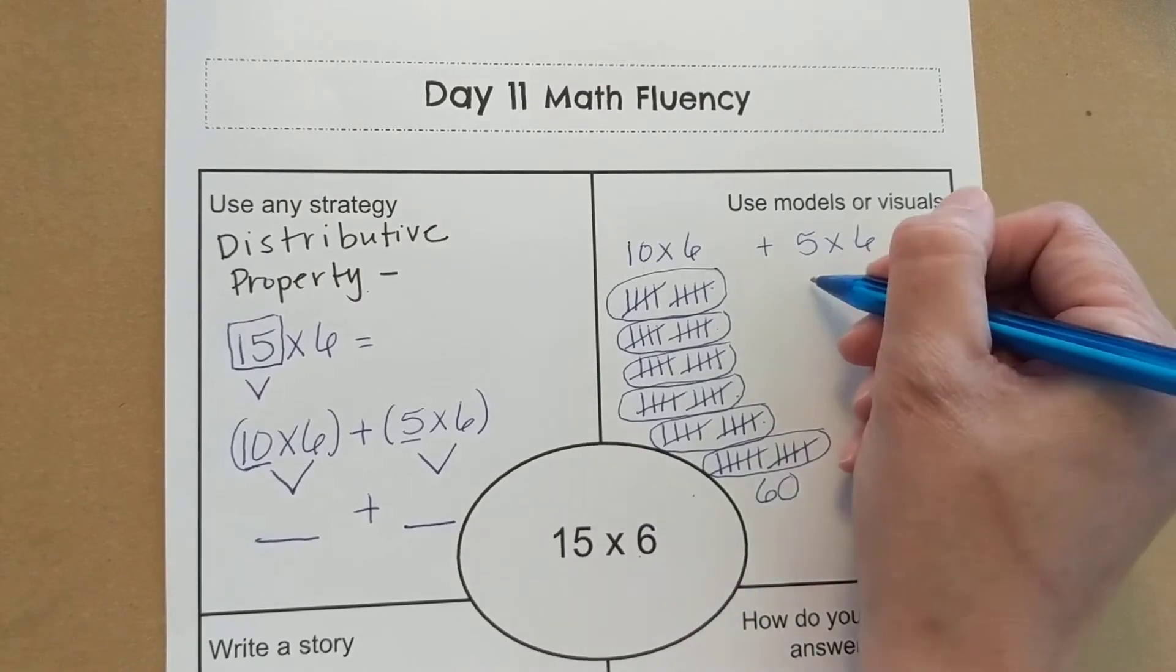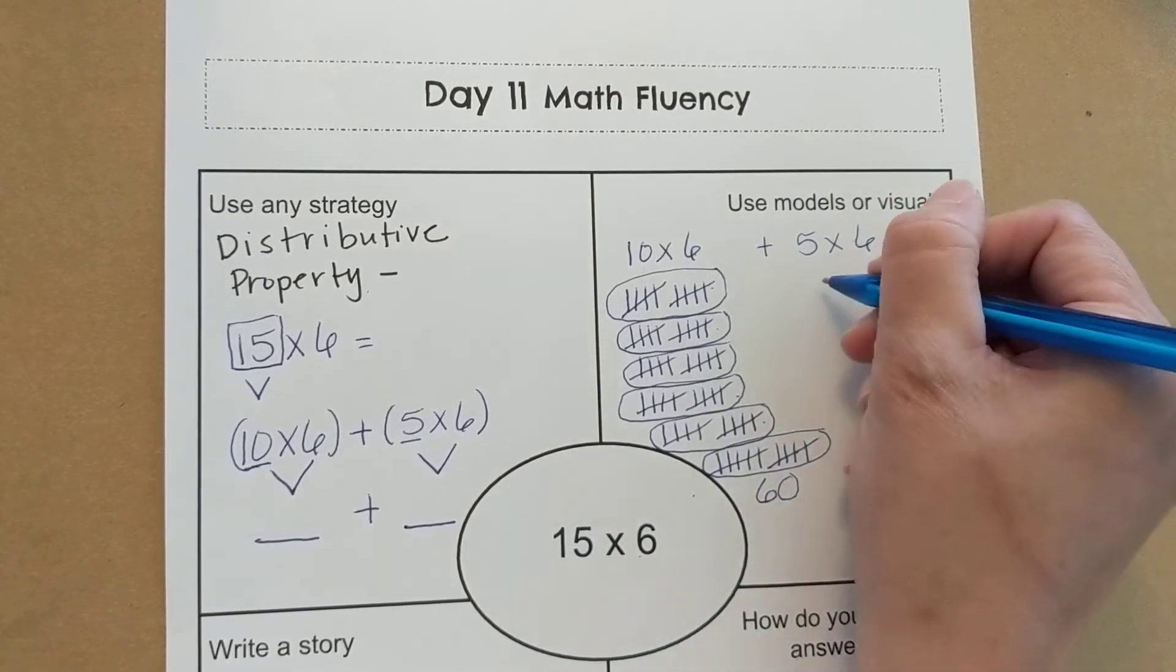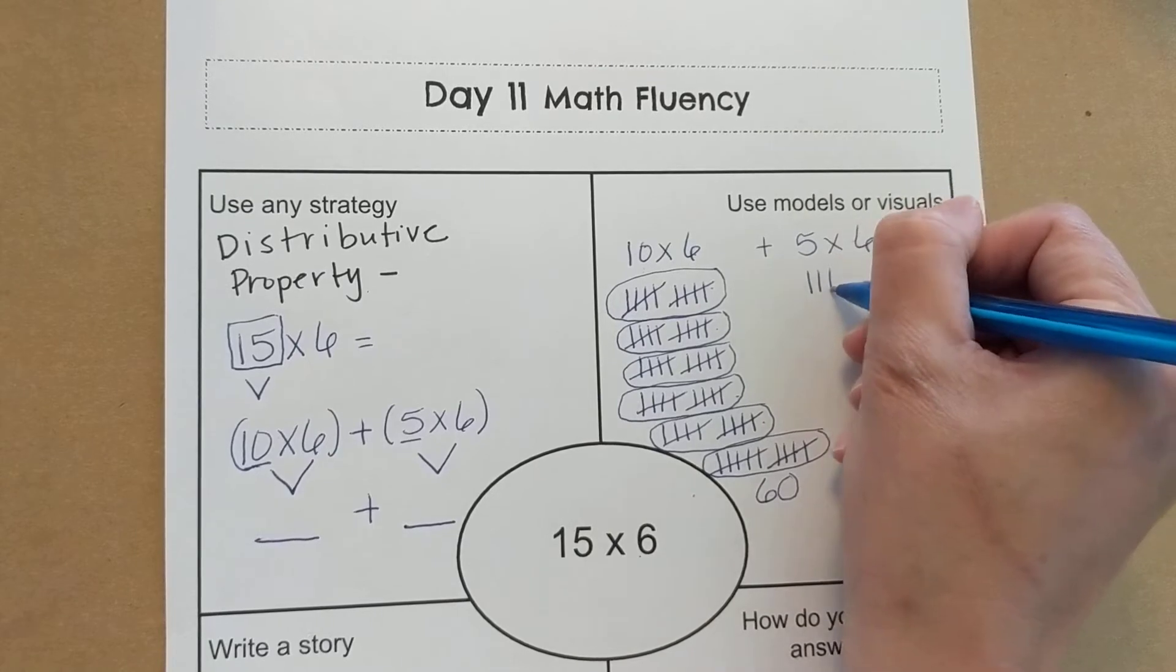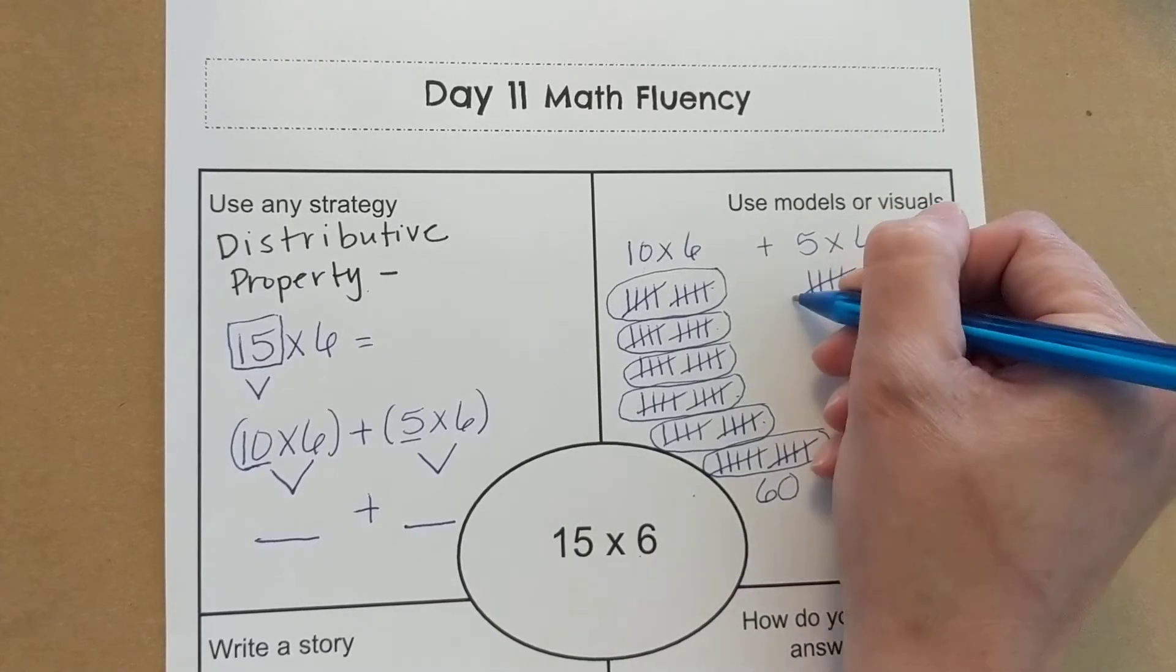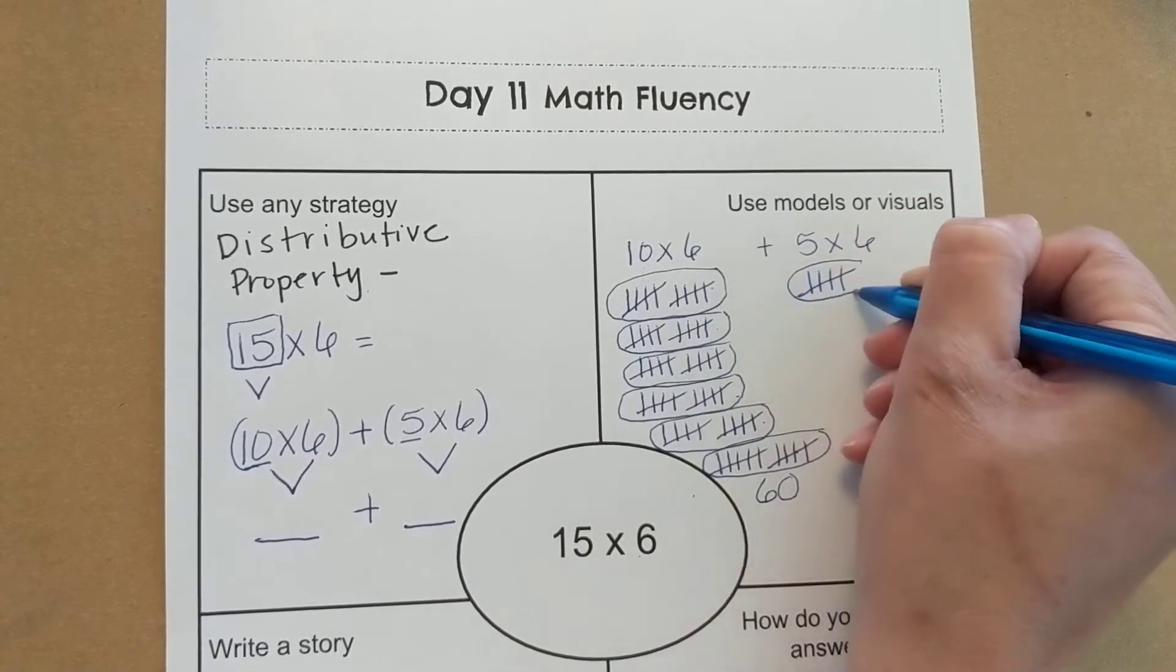Okay? 6 groups of 5. I could also just do the tally marks again to make it easy. 1, 2, 3, 4, 5. That 5th one always goes across the first 4.